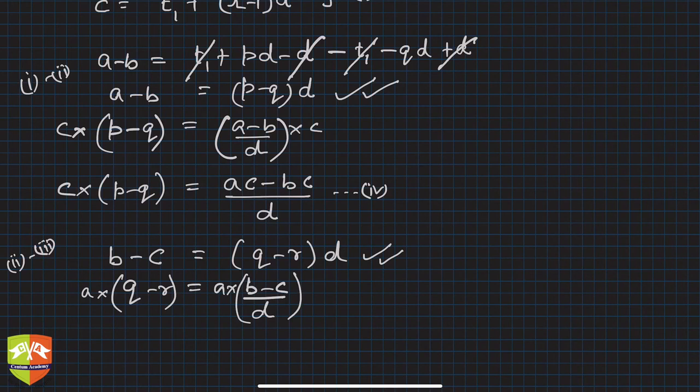Without any problem. So a times (q-r) = (ab - ac)/d. This is equation 5.